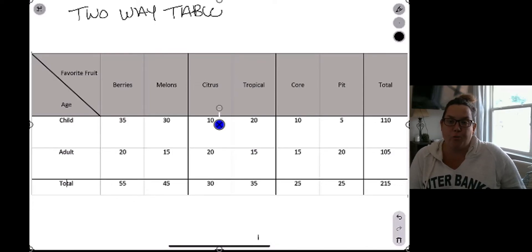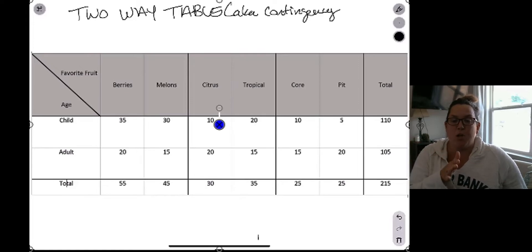Now they're called two-way tables because they're representing two variables, one in the rows and one in the columns. So here you can see age and favorite fruit, and those are the two variables of interest.